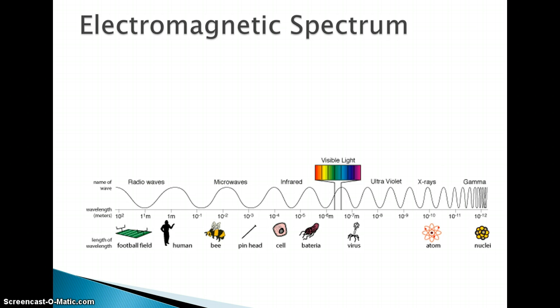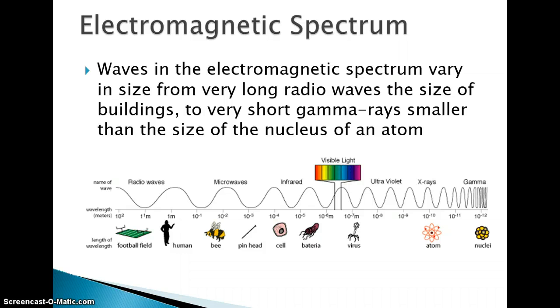If we take a look at the whole electromagnetic spectrum, we have a great little graphic here that talks about what things are measured in a certain number of meters. So it says waves in the electromagnetic spectrum vary in size from very long radio waves, which are down here. Radio waves can be the length of a football field. One wave can be that size. The size of buildings to very short gamma rays, rays that are smaller than the size of the nucleus of an atom.